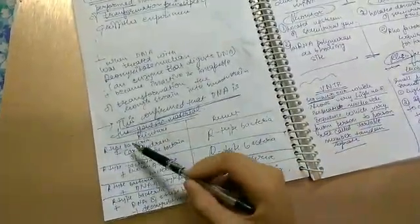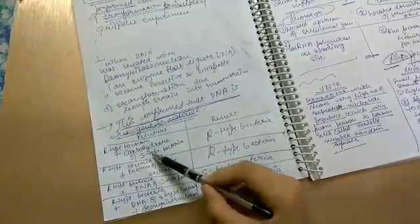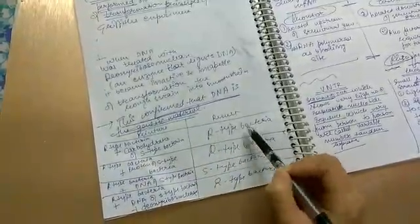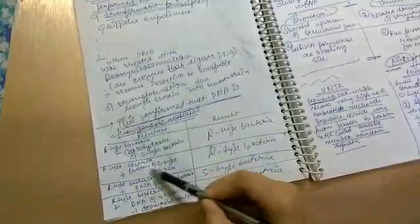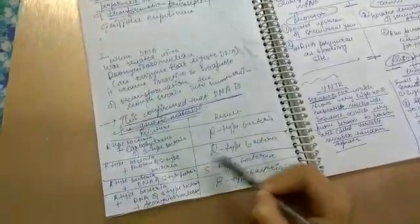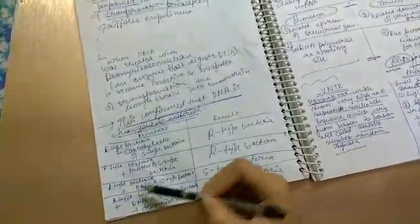The experimental results: R type bacteria plus carbohydrates of S type bacteria resulted in R type bacteria. R type bacteria plus protein of S type bacteria resulted in R type bacteria. R type bacteria plus DNA of S type bacteria resulted in S type bacteria.